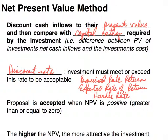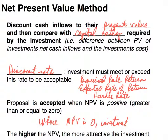At the point where net present value is zero, the investment return is equal to the business's required rate of return. Whenever net present value is above zero, that means we're getting above the discount rate or required rate of return. So the higher the net present value, typically the more attractive the investment is — and we're going to see where that may not be true in some instances in just a few minutes.